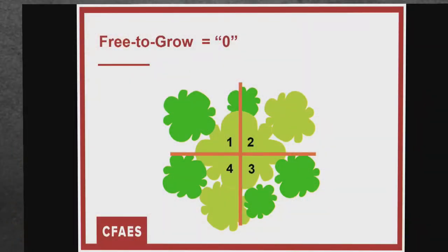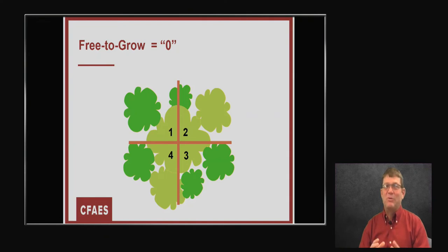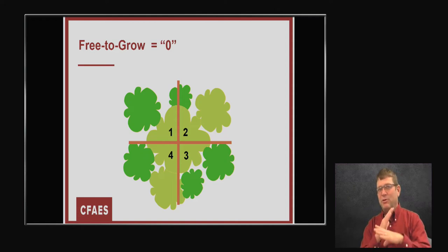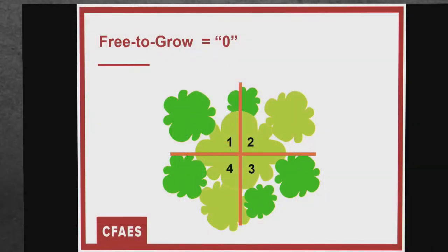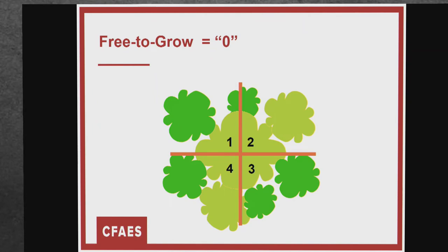Imagine our crop tree right at the center of the crosshairs — say it's a black walnut we're managing for timber. You can see there are trees surrounding it on all sides. Mentally look up at the canopy and divide it into four segments to figure out how crowded it is. In that example, the free-to-grow rating is zero — it means it has no room to grow, only getting light from above. If it's free-to-grow zero, it's going to grow very slowly because it only gets full sunlight when the sun's directly overhead.